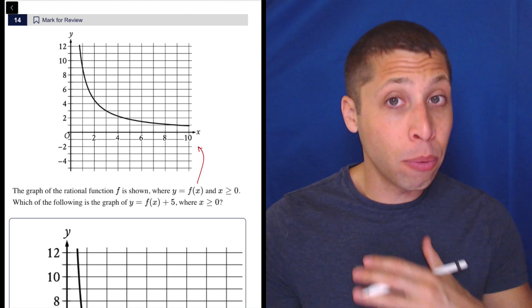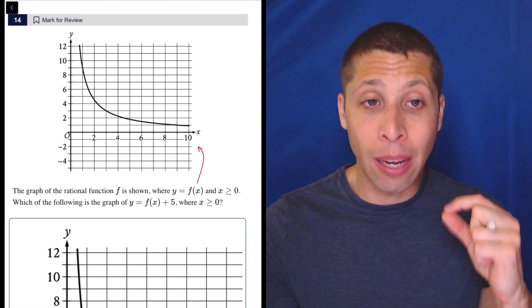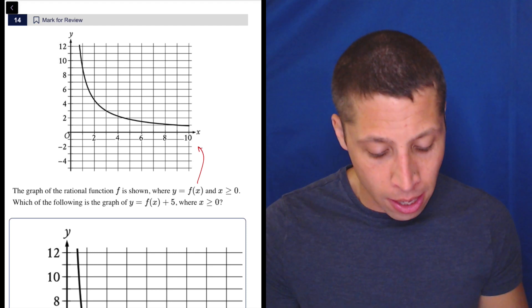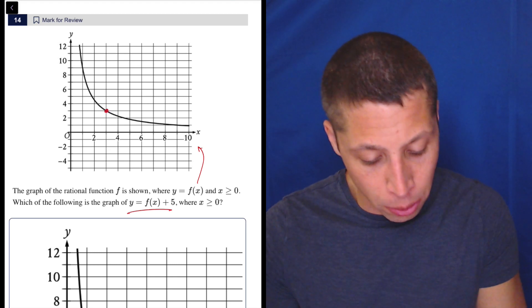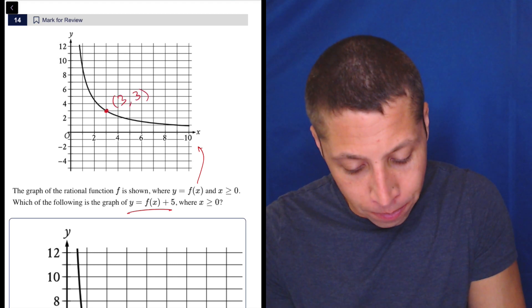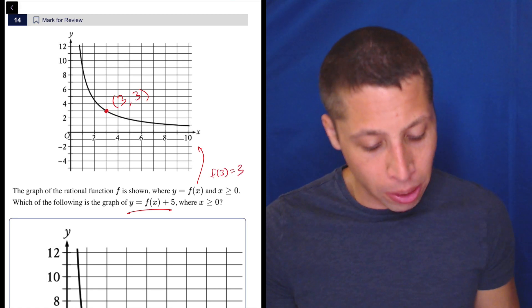The way I would do this if I were unsure is to focus on a point. Pick a point to focus on. So what we're dealing with here, let's just use this point right here. What is that point? That's the point 3, 3. So f of 3 is equal to 3, simple.